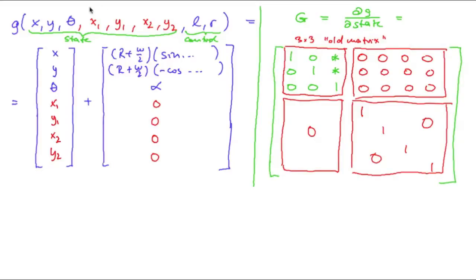To augment our state with all the variables for the positions of the landmarks, we add those equations that just keep the old values constant. So we do not have to modify G at all — the function G just modifies the first three values of our state. For our Jacobian matrix G, we place our old 3×3 matrix into the upper-left corner, fill the lower-right sub-matrix with an identity block, and everything else is zero. This is a pretty simple modification of our algorithm.